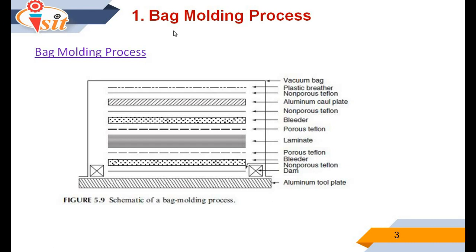In the bag molding process, a vacuum bag is prepared using plastic breathers, non-porous Teflon, an aluminum plate, another layer of non-porous Teflon, and a bleeder. Finally there is the laminate, with porous and non-porous Teflon layers. You can observe the aluminum tool plate and a dam through which resin flow is provided. Through this diagram it is a little difficult to understand the exact manufacturing process, so I will show a video on bag molding.